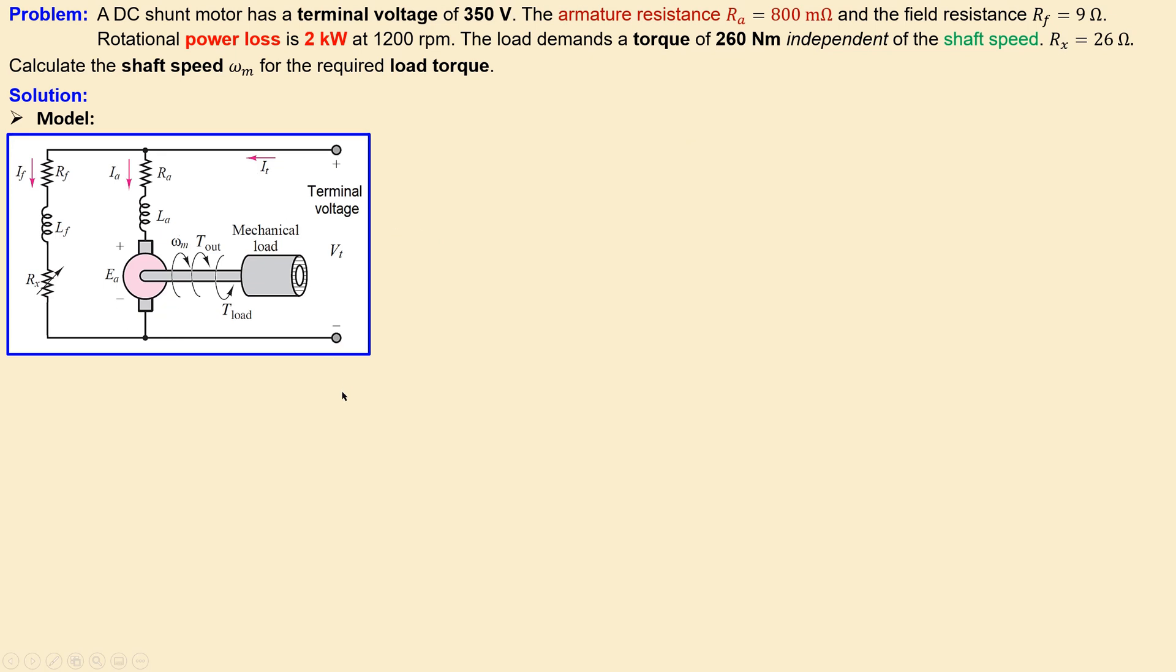Terminal voltage here and we have also the terminal current which will be applied here and this is the mechanical load where you see the load torque, 260 newton meters. This is the rotational speed, the direction of the rotation, and this is the output torque of this system. You have always in the motor convention that the output torque is always in the opposite direction to the load torque.